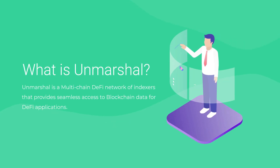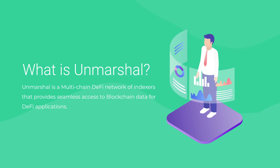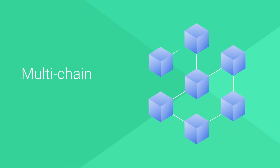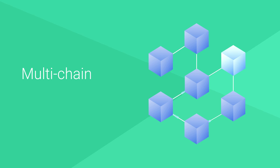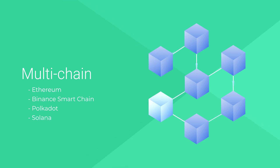Unmarshall is a multi-chain DeFi network of indexers that provides seamless access to blockchain data for DeFi applications. Unmarshall provides rich, meaningful, and reliable access to data through decentralized network nodes. The DeFi economy will be able to leverage Unmarshall's solution to extract rich and structured data across multi-chains like Ethereum, Binance Smart Chain, Polkadot, and Solana, with increased scalability to disrupt the DeFi data sphere.